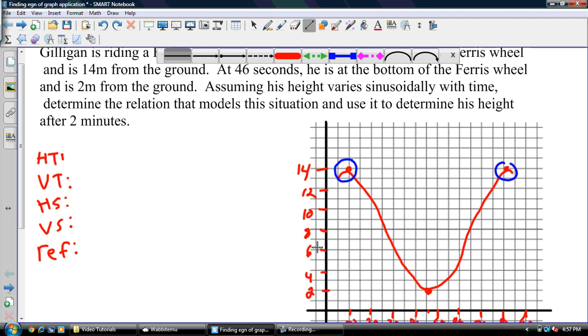Our sinusoidal axis comes halfway between our max and our min. So halfway between 14 and 2 would be 8. And if you're wondering how I got that, 14 plus 2 divided by 2 is 8. It's like the average.